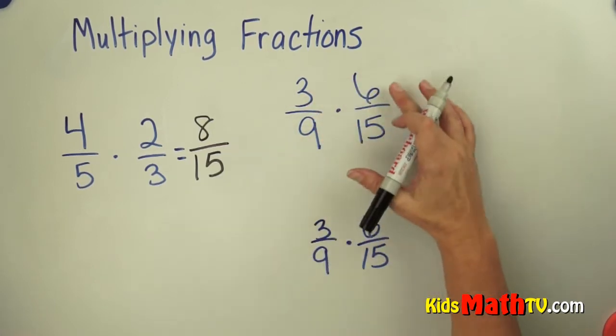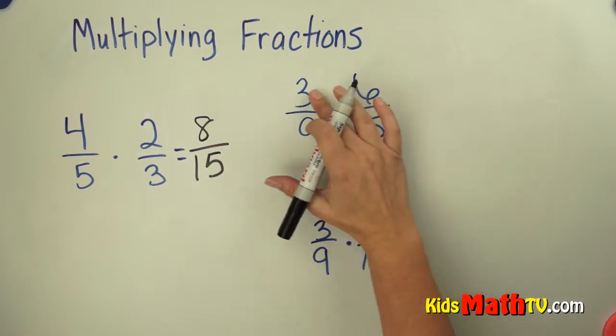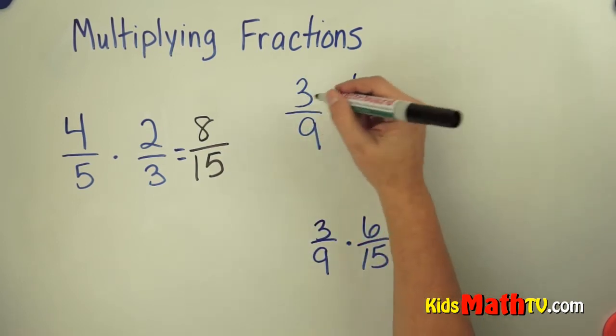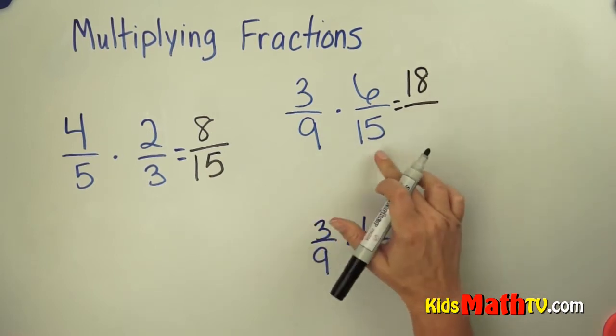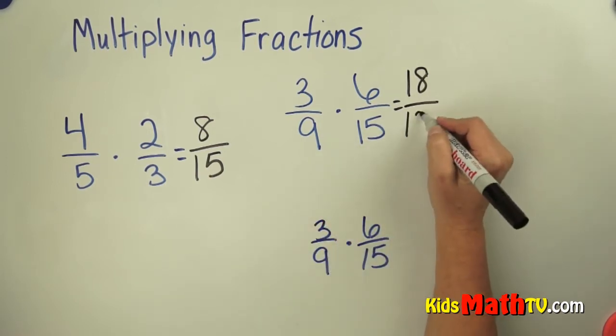Here is another problem, 3 ninths times 6 fifteenths. Again, don't worry about common denominators, simply multiply the numerators. 3 times 6 is 18, 9 times 15, if we do 9 times 15 we get 135.